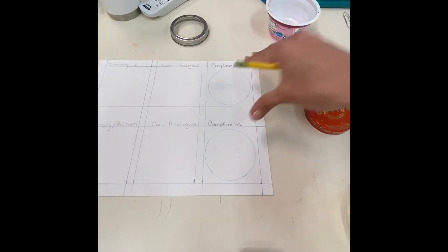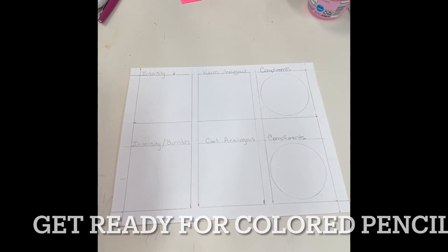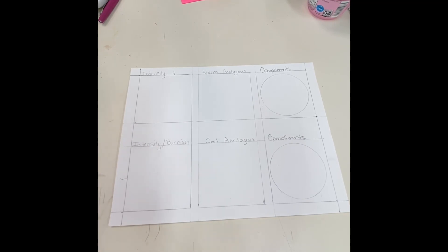When you have finished the worksheet, you should have six boxes all labeled. Remember the boxes should be roughly the same size, but it's okay if they're not exactly perfect.